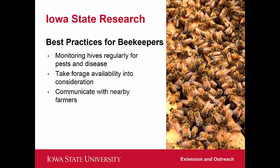So what does this research mean for regular folks? We've identified three major stakeholders: beekeepers, farmers, and landowners — including those who just have a backyard garden and want to bring more pollinators to their yard. First, what this means for beekeepers: our recommendations have to do with making sure their hives get monitored regularly for pests and disease.